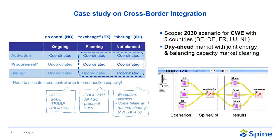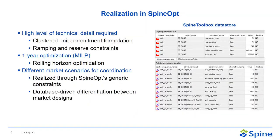Below you can see a snapshot from the Spine Toolbox project I was using to do this study. For the realization in SpineOpt, we required a high level of technical detail, so we used a clustered unit commitment formulation optimization and incorporated ramping and reserve constraints. Moreover, we used a rolling horizon optimization and realized these different market scenarios through SpineOpt's generic constraints, differentiating between the different market designs in a data-driven way.